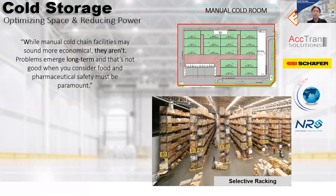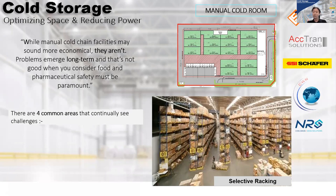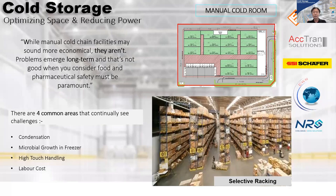I would like to go through in further detail the three options of cold room design. We are looking at option one — the manual cold room. No doubt, the manual cold room is the cheapest option to construct. However, it may not be as economical as it sounds, especially in the longer term. There are four common areas which continuously cause headaches in manual cold room operations. Number one: condensation. When employees go in and out of a cold room — by reach truck, pallet picker, hand truck, or loose picking — condensation will always find its way into the cold room.